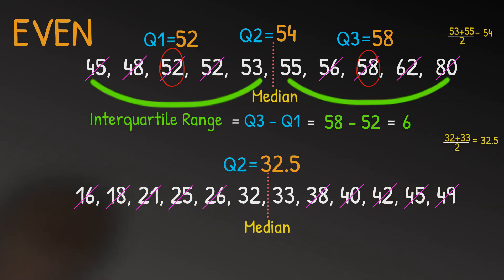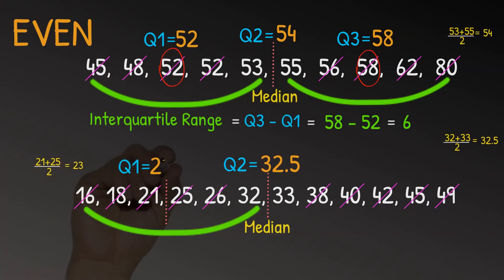However, this time, Q1 is in the middle of six numbers. So it's in between 21 and 25. So this time, like the median, Q1 is also going to be the number in between these two numbers or the average of them. So 21 plus 25 divided by two. So Q1 is equal to 23. And likewise, Q3 is going to be in the middle between 40 and 42. So Q3 is equal to 41.